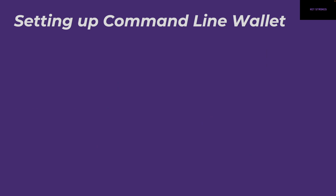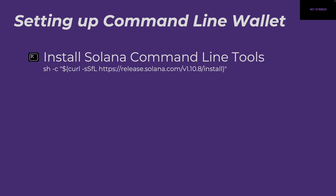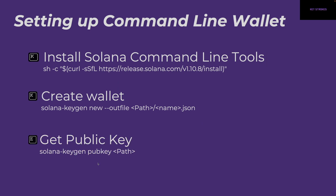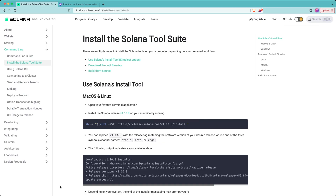So let's see how we can set this up. Step one is to install the Solana command line tools. You can find how to do that in the documentation for Solana — it should be a pretty straightforward process. Then we'll create our wallet using a command where we specify the file path where we want our wallet to exist, and then we can use another command to look at the public key of the generated wallet.